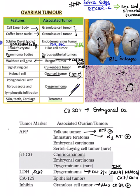Now coming on to tumor markers. AFP (alpha-fetoprotein) is seen in yolk sac tumor or immature teratoma. Beta-hCG is seen in choriocarcinoma. LDH and PLAP are seen in dysgerminoma.